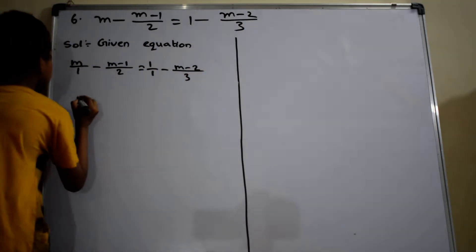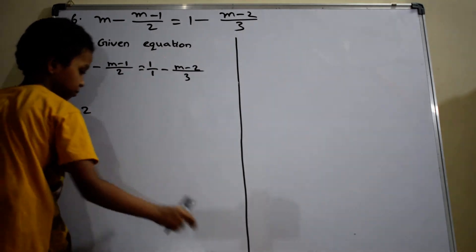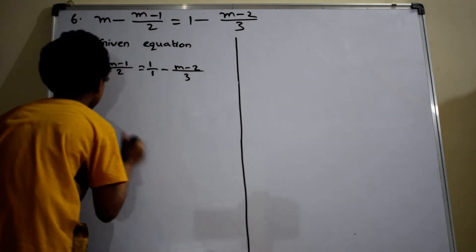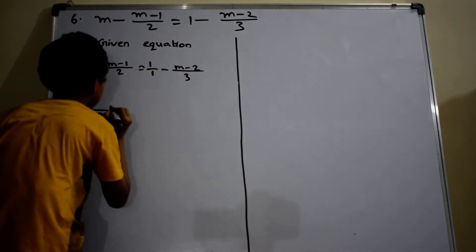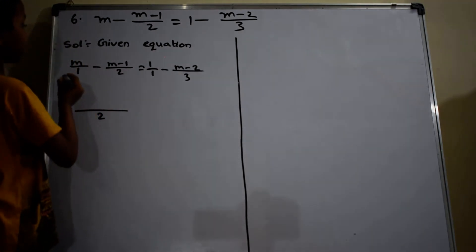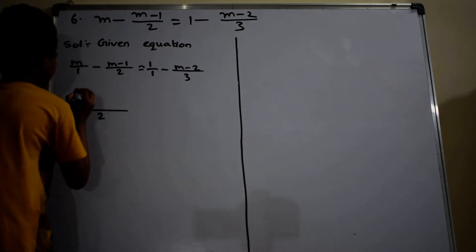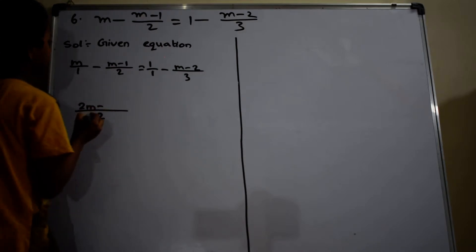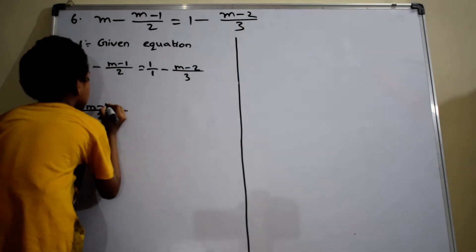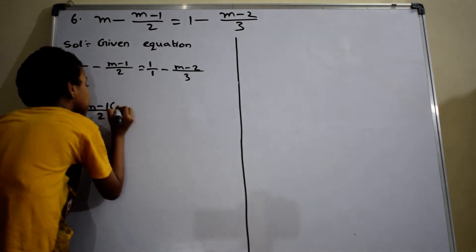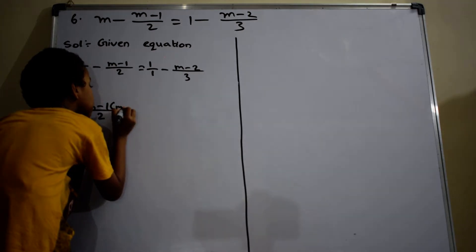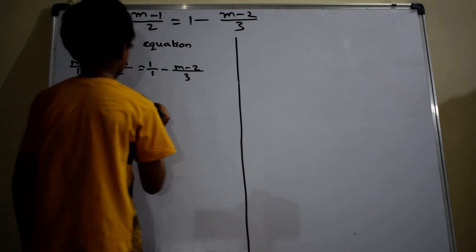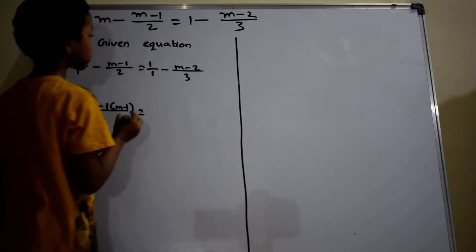For LCM of 1 and 2, M equals to 2. So 2 by 1 equals to 2. Then 2 into M equals to (M minus 2) by 2 equals to 1. And 1 into (M minus 1) equals to 1.